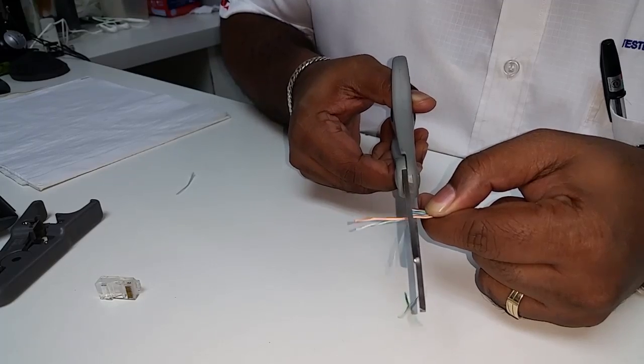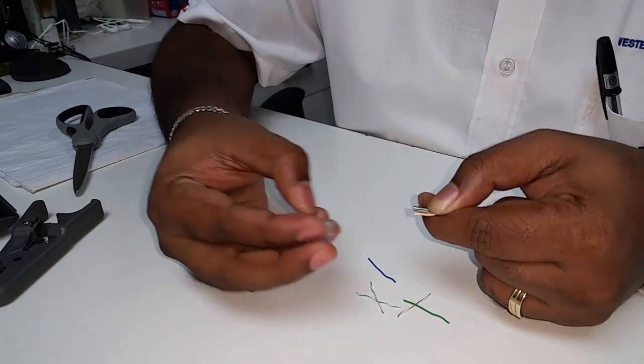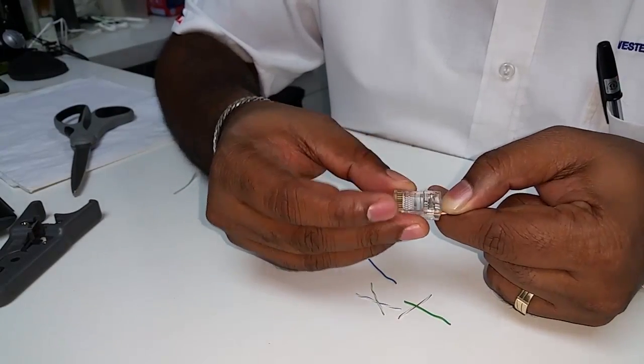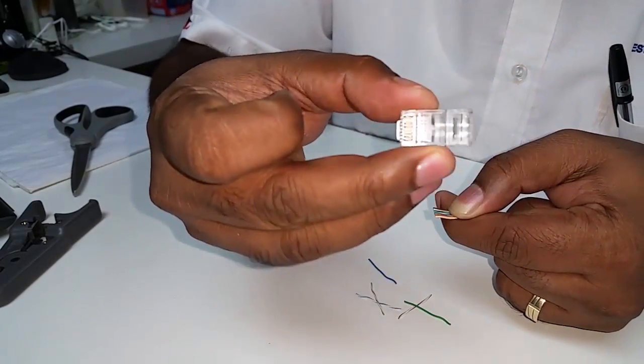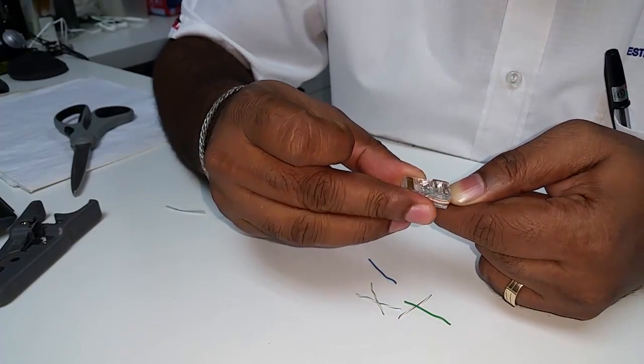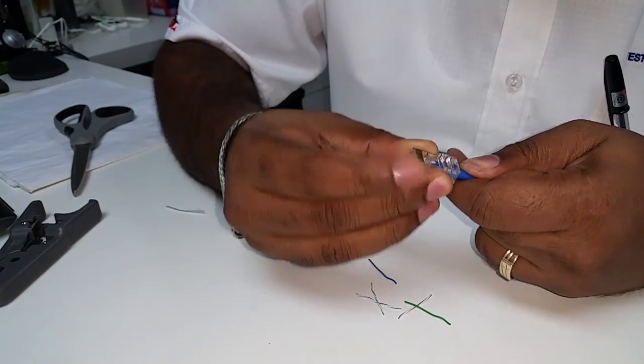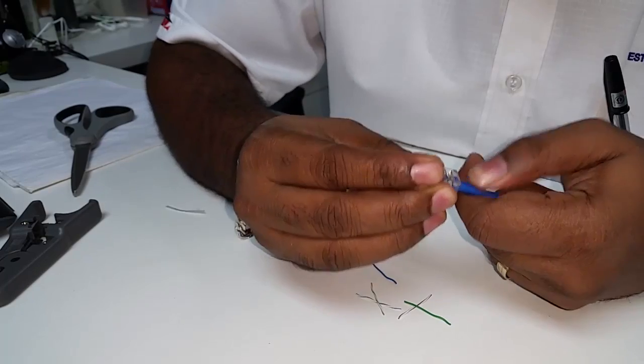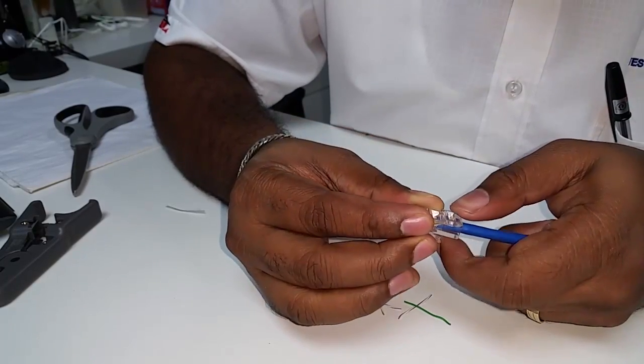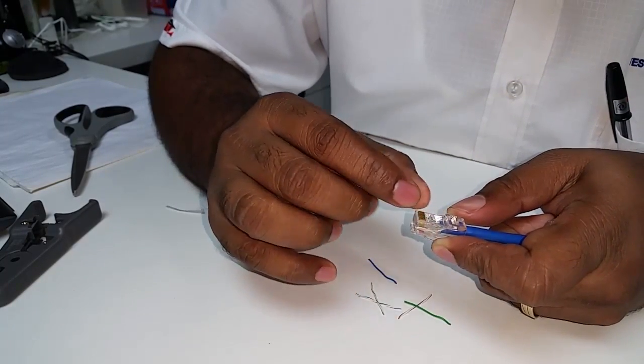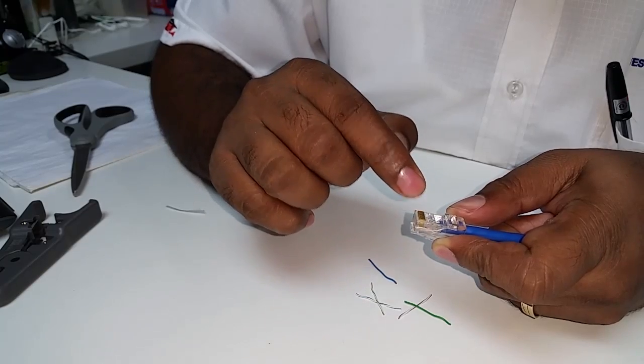Then you take the clamping tool. There are grooves inside here, you can see. You line them up and keep pushing and the cable will go in very nicely. Then you put this sheet all the way under here and you check once again: white orange, orange, white green, blue, white blue, green, white brown, brown.